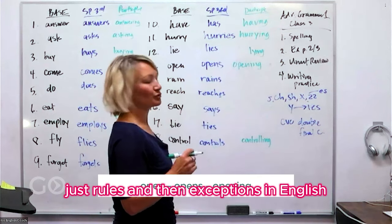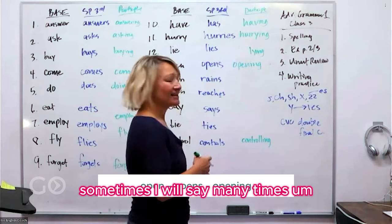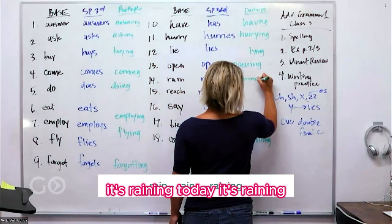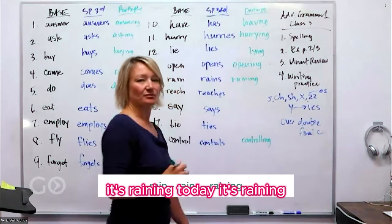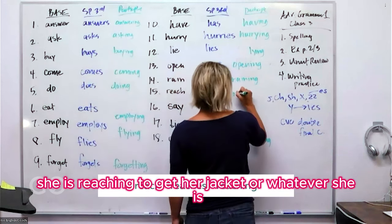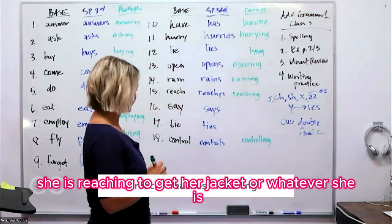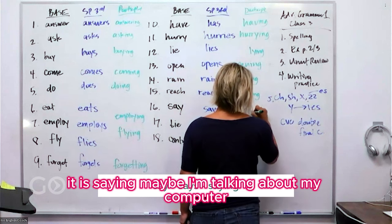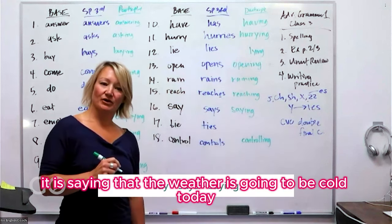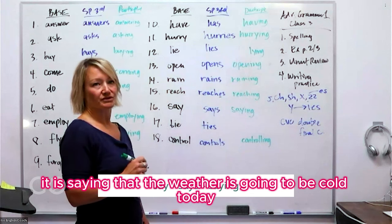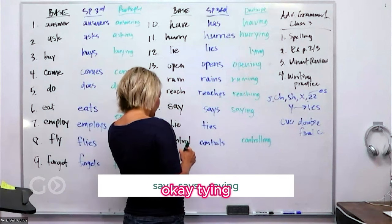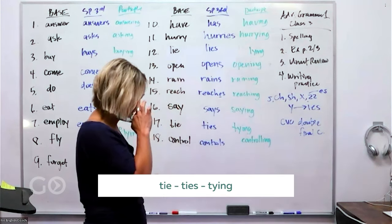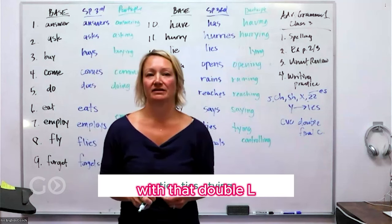There are so many rules and then exceptions in English, and people often make spelling mistakes. 'It's raining today.' 'She is reaching to get her jacket.' Maybe I'm talking about my computer: 'It is saying that the weather is going to be cold today.' Then 'tying' — 'I am tying my shoes' — and the final one is 'controlling,' with that double L.